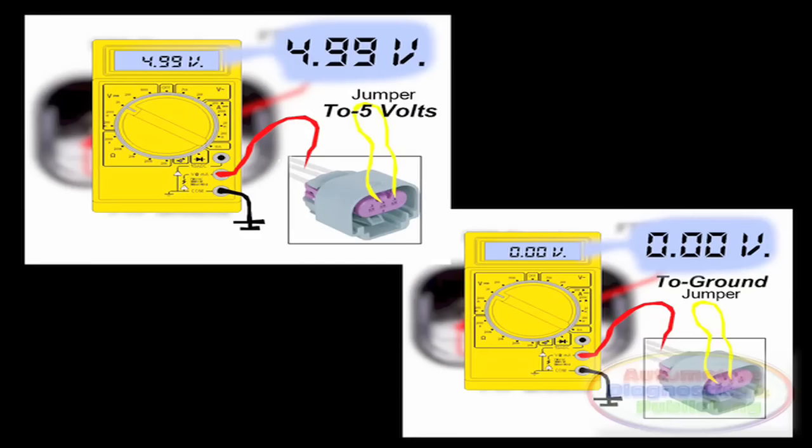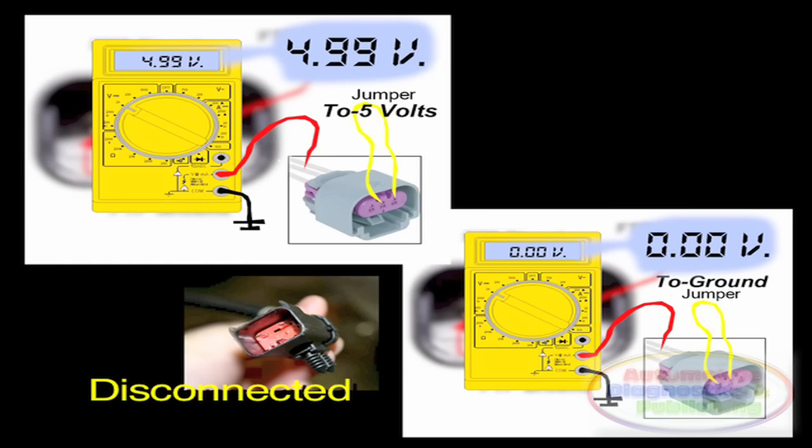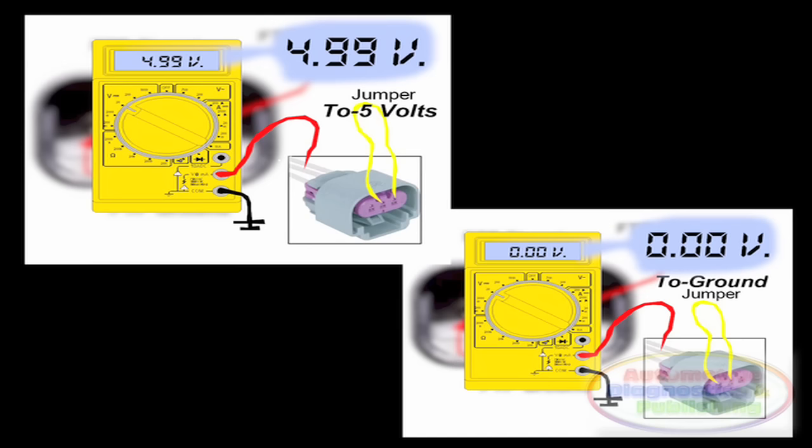Do this at the sensor connector. You should see zero and five volts respectively. That proves the ECM wiring. It also proves that the tank pressure sensor is faulty. Replace the sensor.